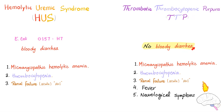In TTP, there is no bloody diarrhea and no E. coli O157:H7. TTP has five features: microangiopathic hemolytic anemia, thrombocytopenia, and acute renal failure — the same three as HUS — plus two unique ones: fever and neurological symptoms. The neurological symptoms are usually altered mental status.